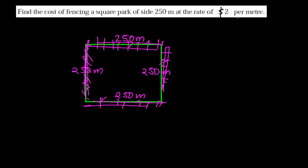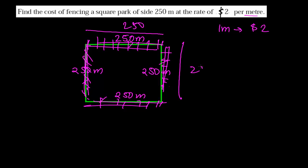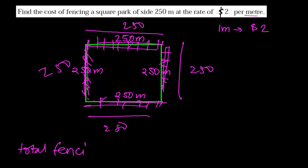To fence one meter we need $2, so first we need to find out the total length that we need to fence. We need to fence this part — 250 — and again this part — 250 — and again this part — 250 — and again this part — 250. All four sides need to be fenced.